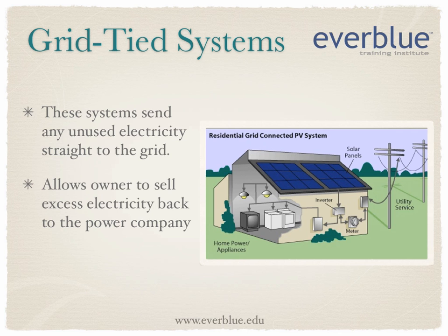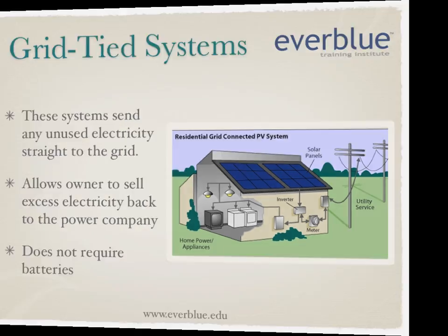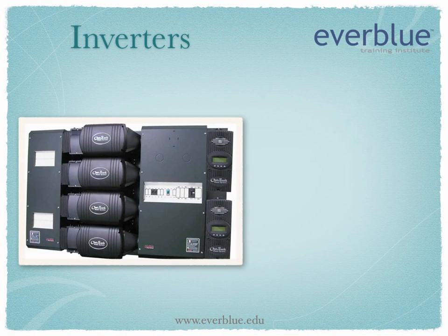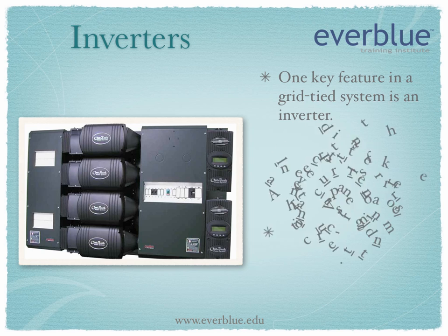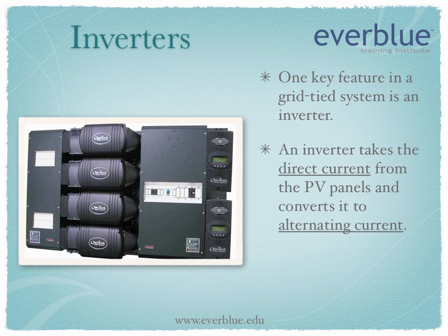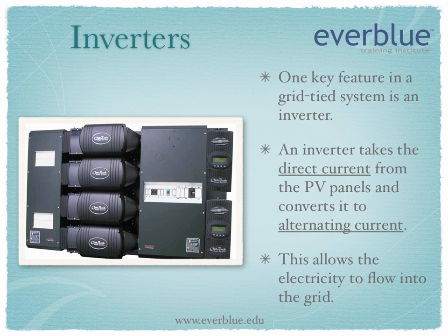Because this system uses grid power during the hours it is not producing, it does not require battery storage. One key feature in a grid-tied system is an inverter. An inverter takes the direct current produced by the PV panels and converts it to alternating current, which can then be sent into the grid.